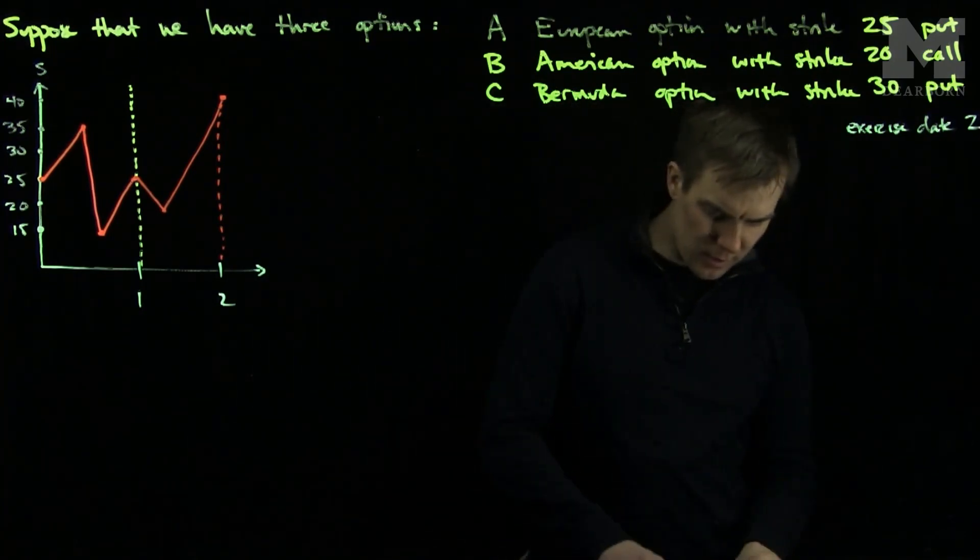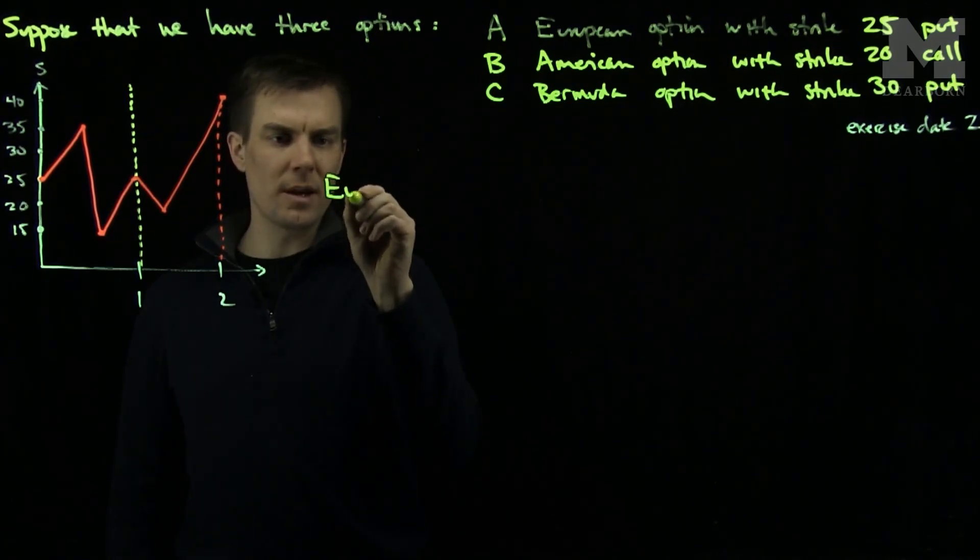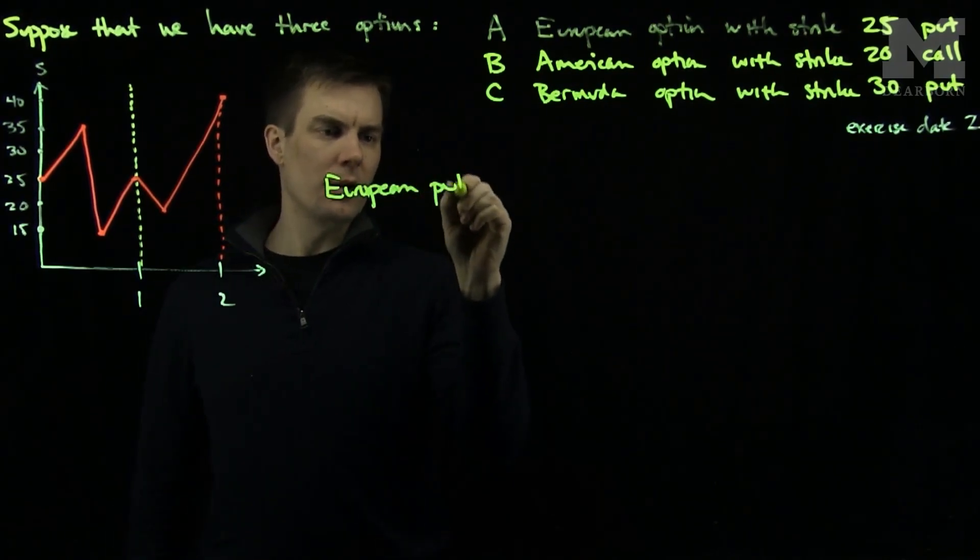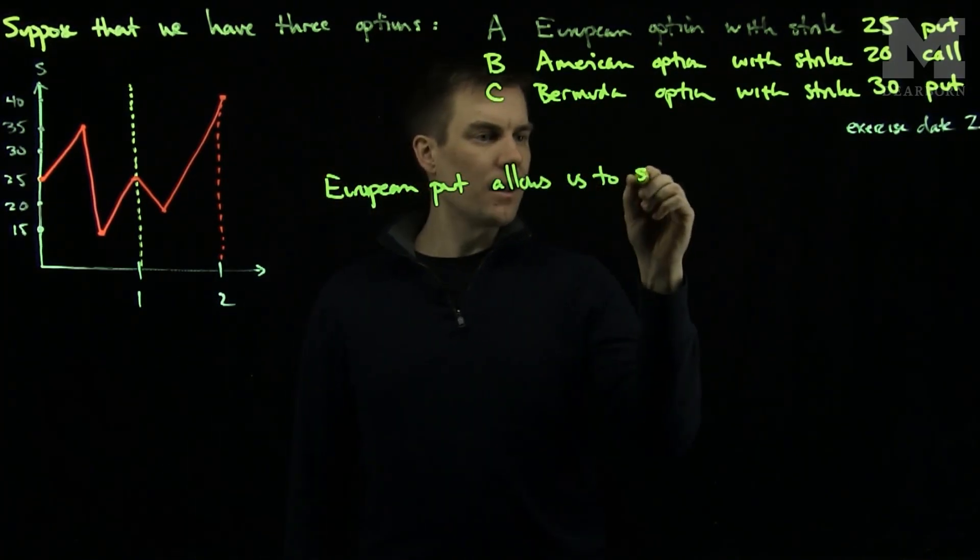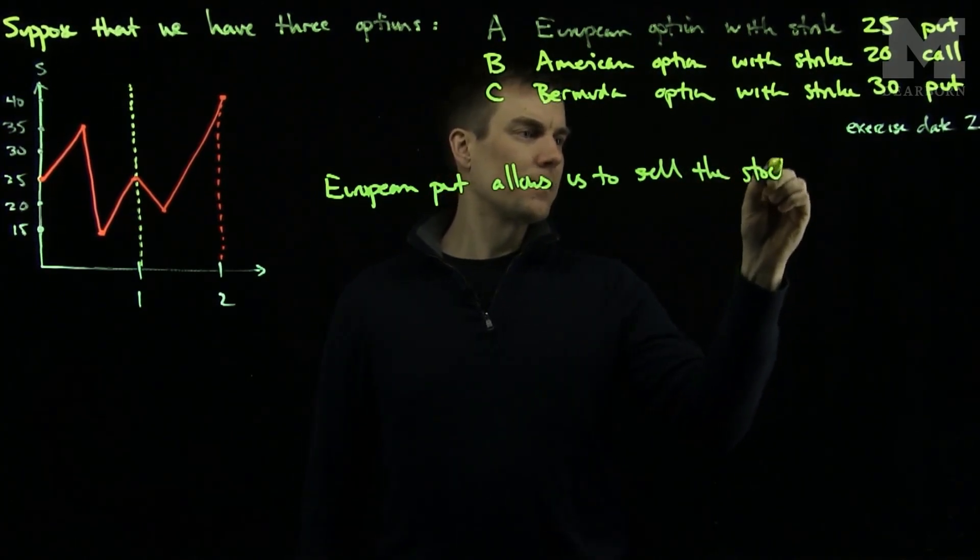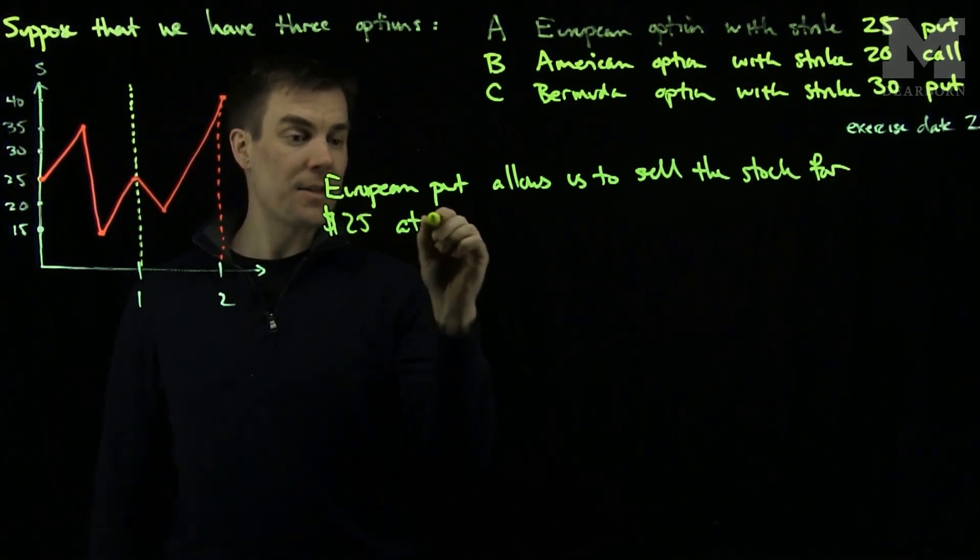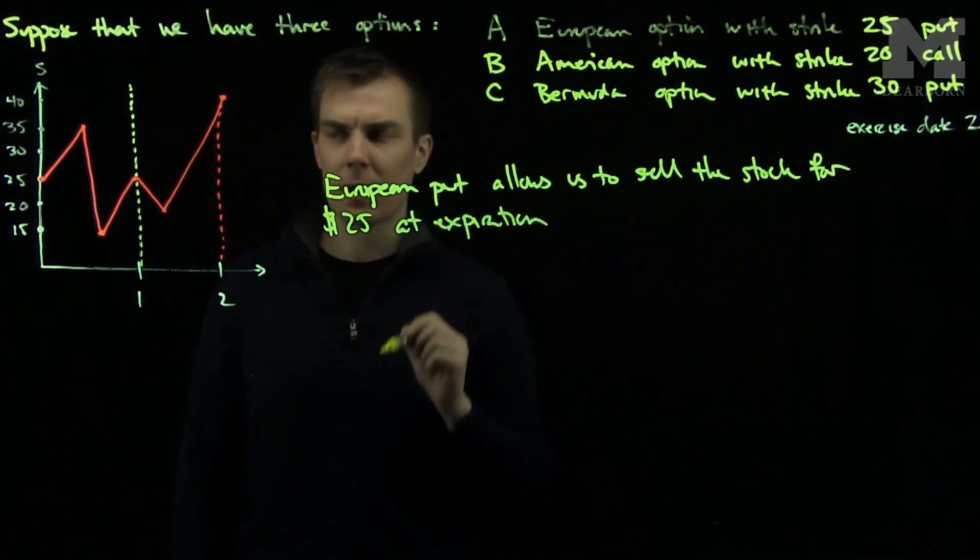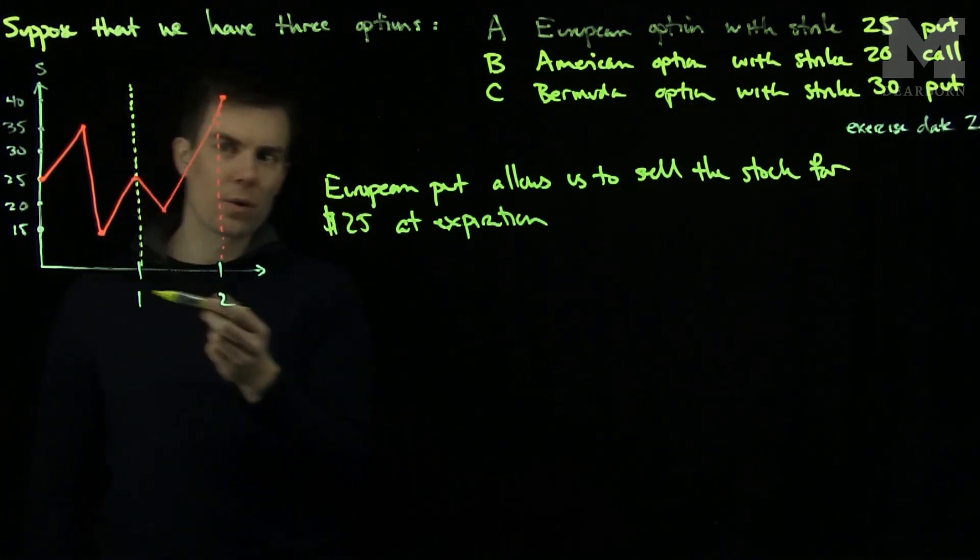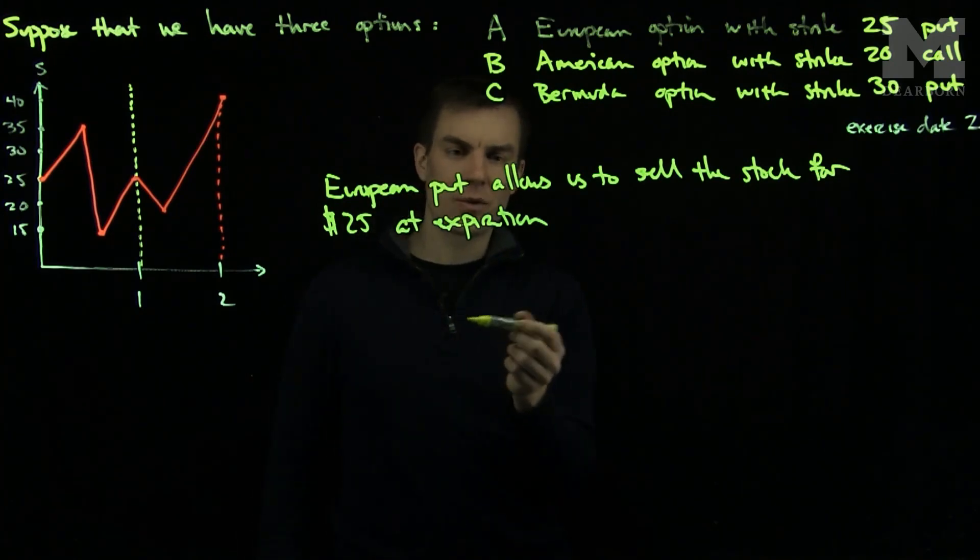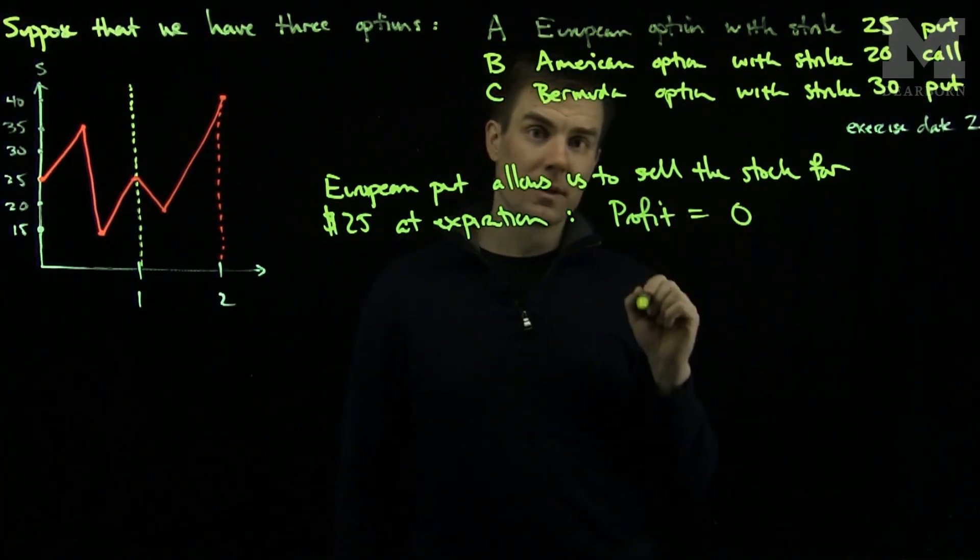Now let's figure out the profit of each of these options. Let's consider the European option. The European put allows us to sell the stock for 25 at the expiration time. But the stock is worth 40, so there's no reason I'd sell it at 25. So the profit from this European option will be zero.